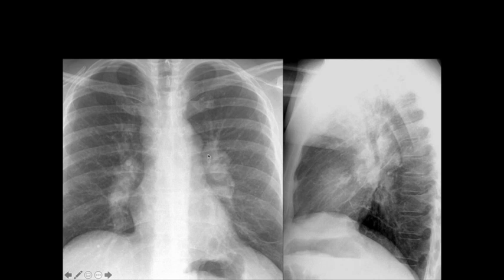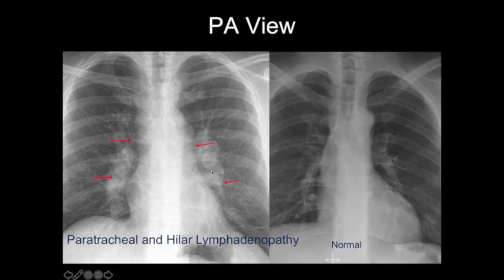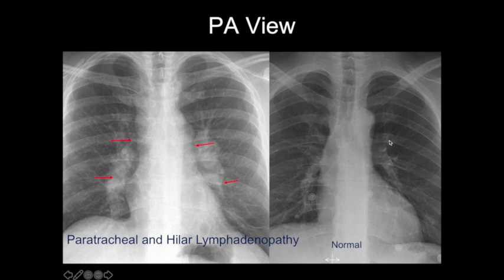So in this case, based on what we've seen, we're calling mediastinal and hilar adenopathy bilaterally. If you're still confused, have a look at our normal case here. Look at the normal contours of the mediastinum. Our AP window is usually concave — it's convex here.